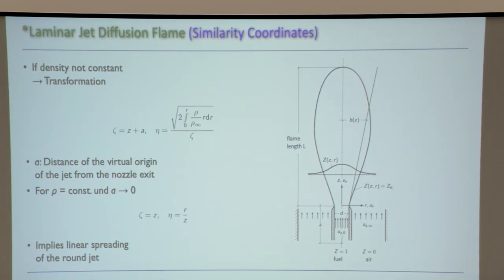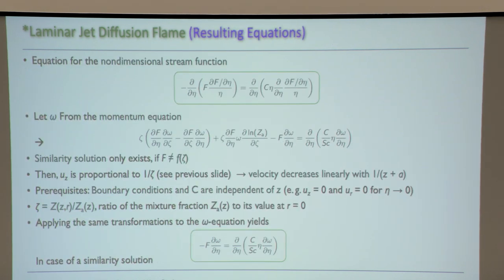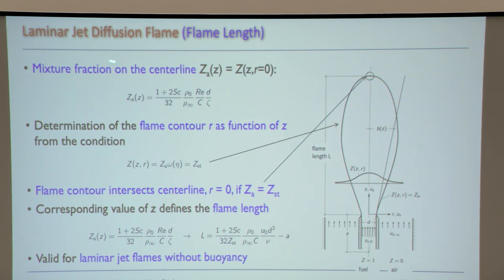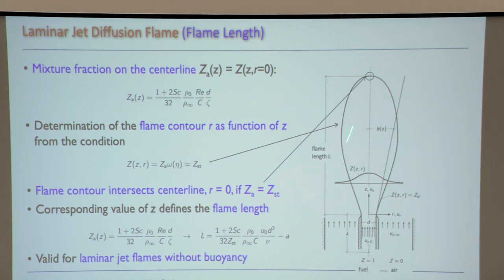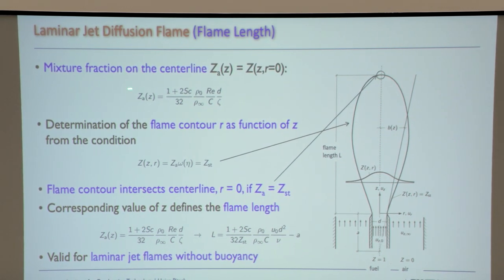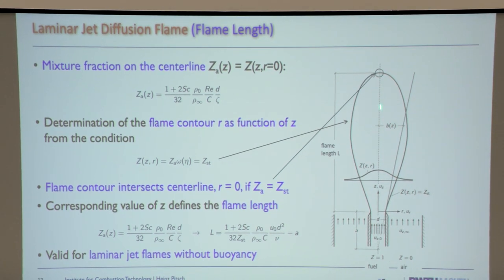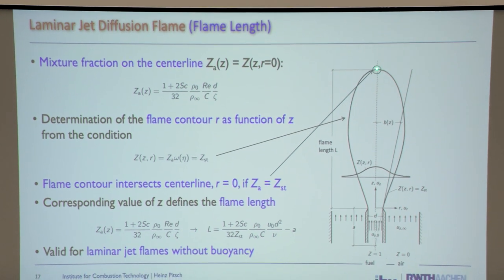This 2D set of equations has a similarity solution. Without going into the details, the similarity solution gives you the mixture fraction profile in space, and specifically the mixture fraction along the centerline as a function of Reynolds number and axial distance ζ, nozzle diameter d, and so on.